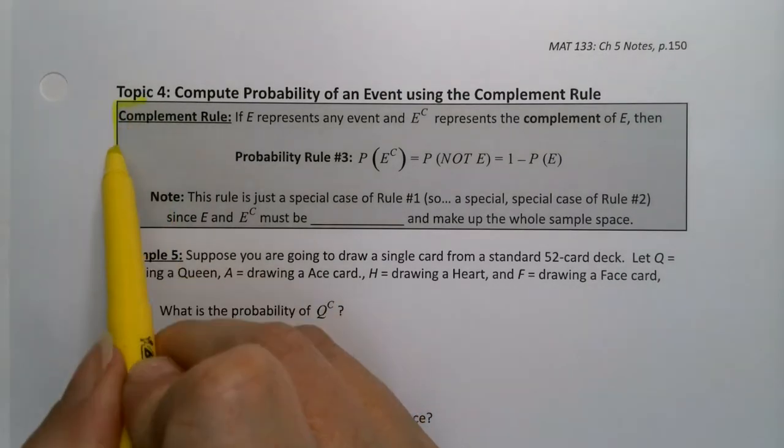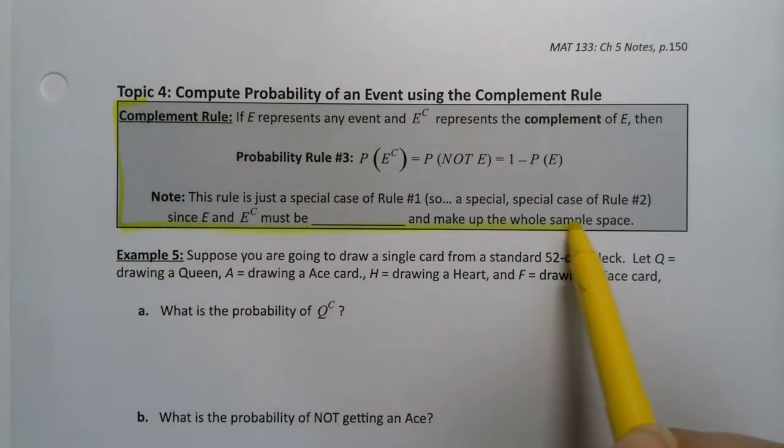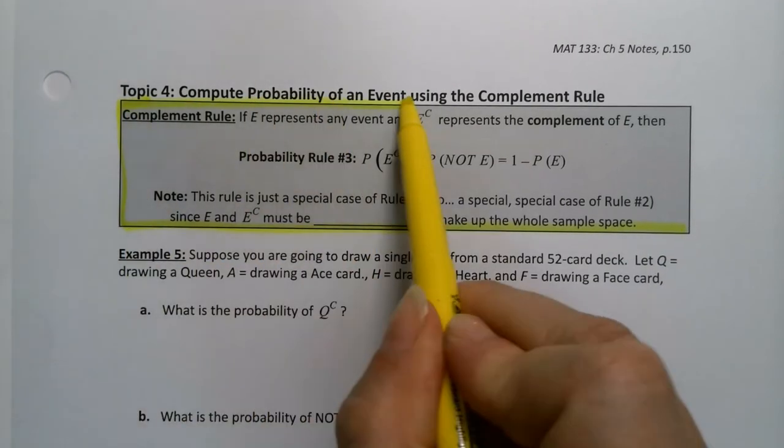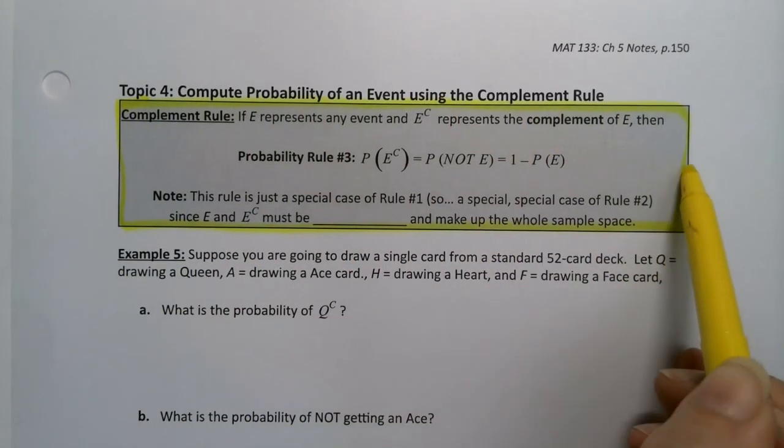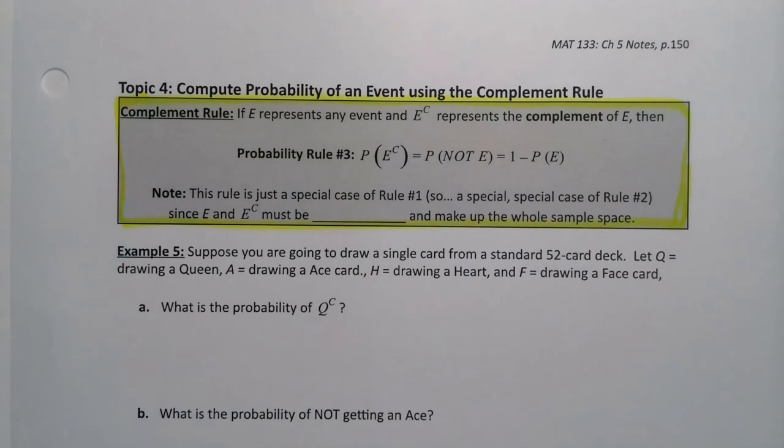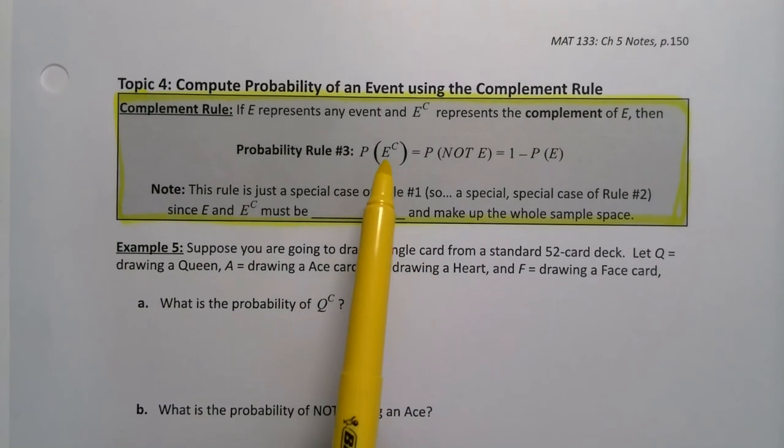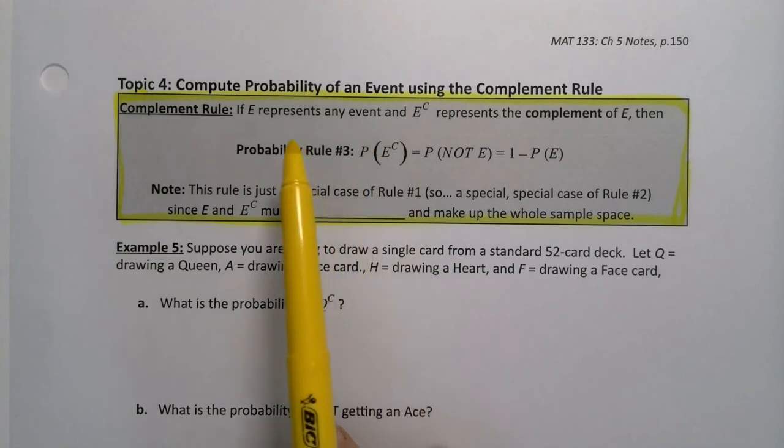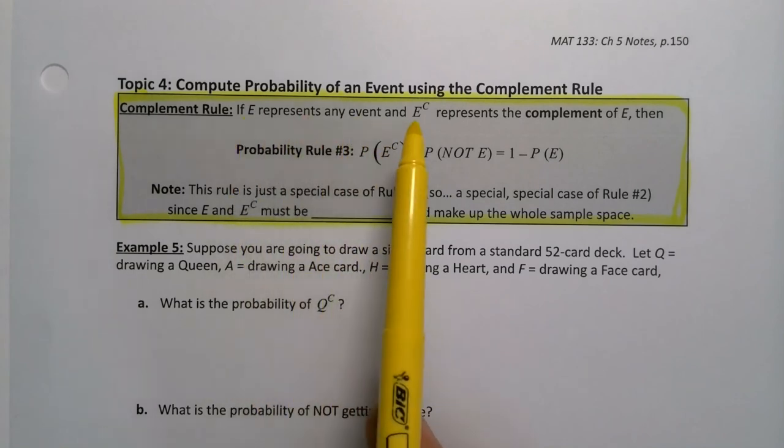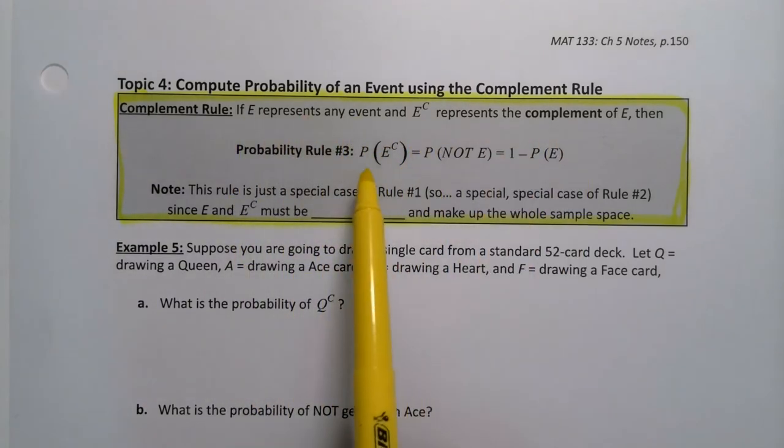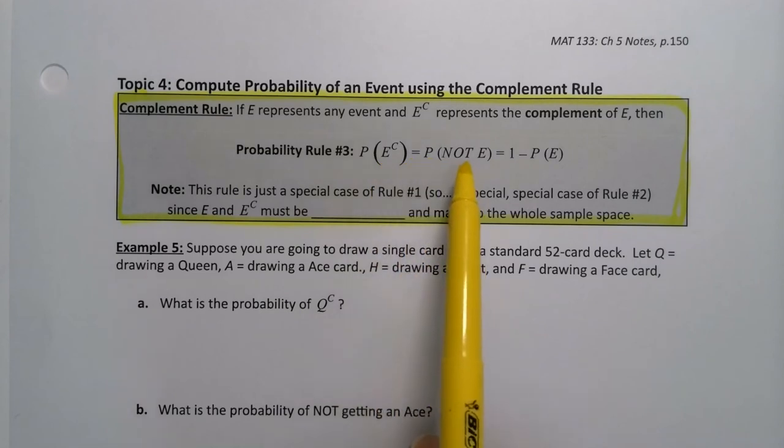And of course in this chapter, what should come right after we learn a new definition but a new way of finding a probability. So this is probability rule number three on our exam notes packet. It's the probability of the complement of an event. If you have E representing any event and E complement is its complement, then the probability of E complement, which is the probability of not getting E, is 1 minus the probability of E.